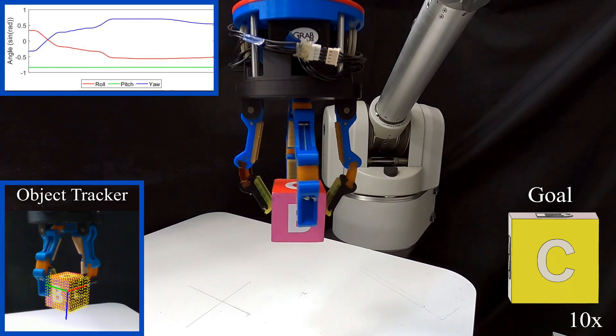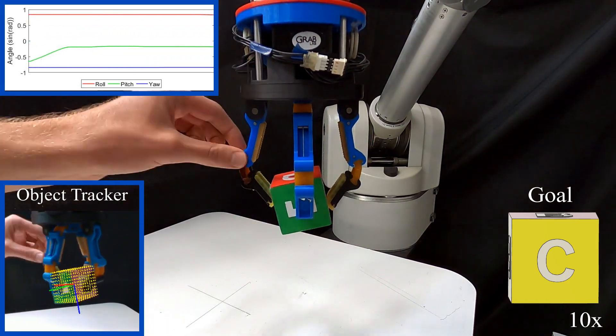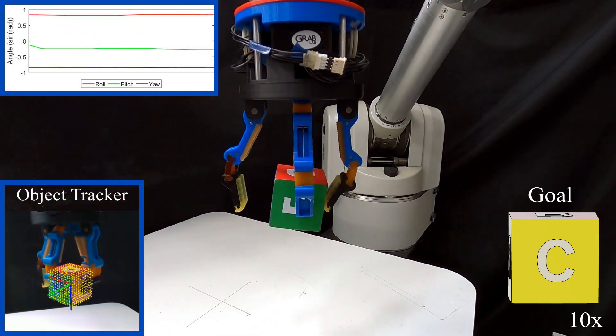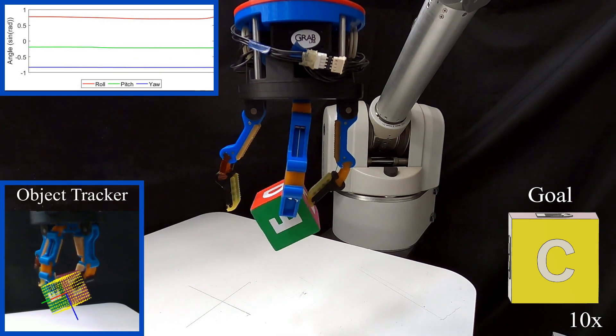We test our planning solution with various tasks. First, due to the online replanning via object tracker feedback, we are able to recover from undesired and unmodeled perturbations.